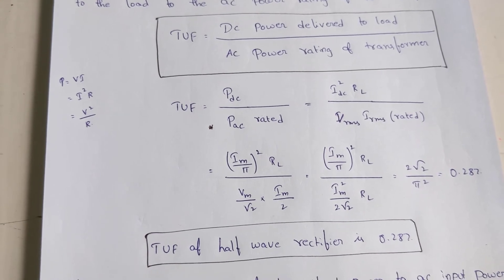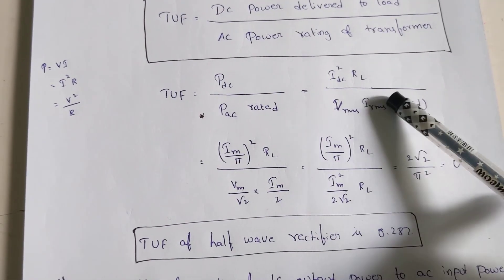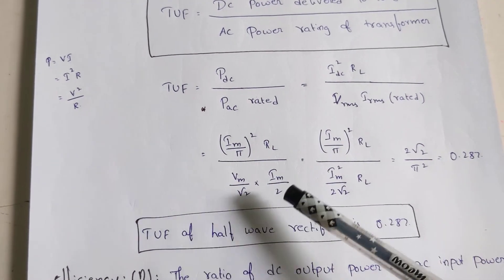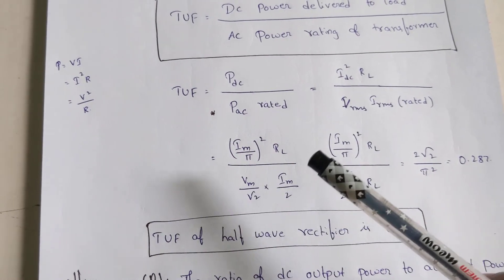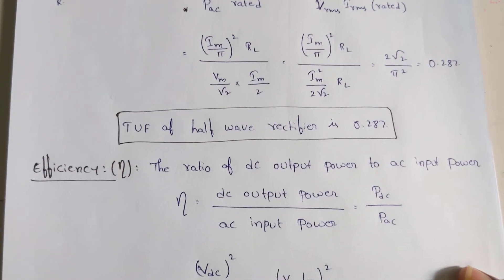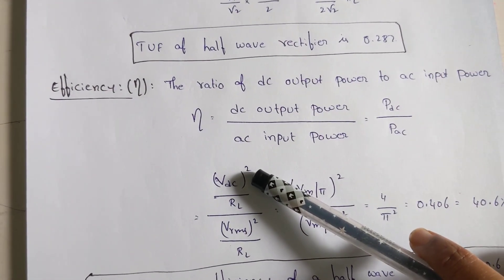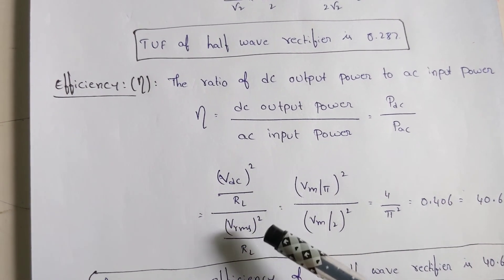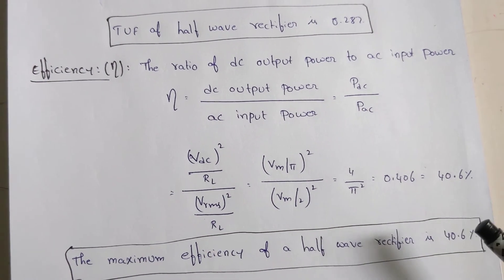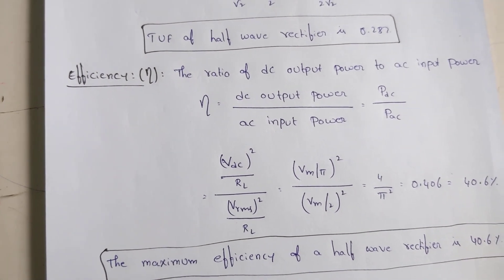Calculating the transformer utilization factor gives 0.287. For efficiency, it is DC output power divided by AC input power: (VDC² / RL) / (VRMS² / RL). Substituting the known values gives a maximum efficiency of 40.6% for the half wave rectifier. This is the complete way to represent the answer for the half wave rectifier. I hope this is useful — thank you.